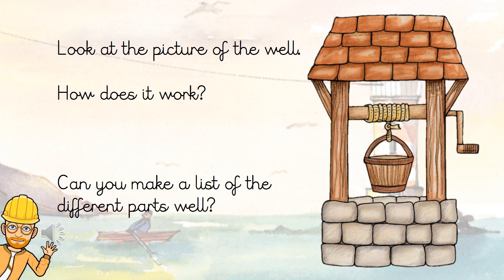Here's a picture of a well — be careful you don't fall in! A well has a winding mechanism. How does it work? The bucket is attached to a rope. The rope is attached to an axle. The axle is attached to a handle. You wind the handle so that the bucket moves up and down, into and out of the water. That way you are able to lift water, which is heavy, out of the ground.